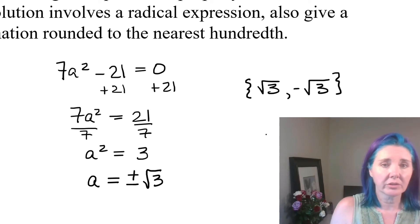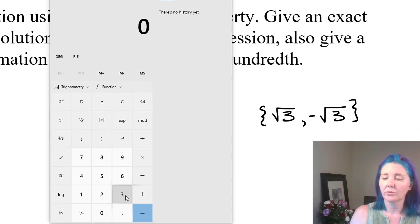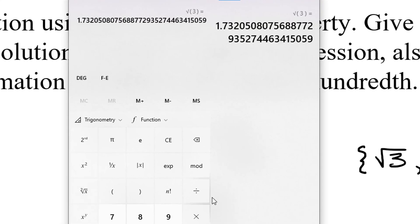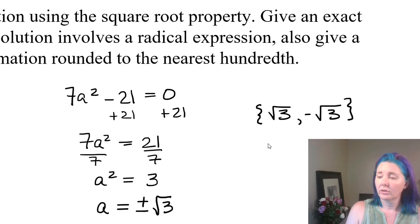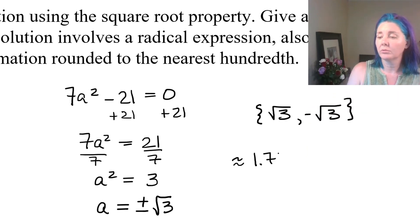But in our instructions, we were told that if you have a radical like this one that cannot be simplified because 3 is not a perfect square, then they wanted us to get a decimal approximation. So I'm going to open up my calculator. All right, so I'm going to take the square root of 3, which is 1.73 and so on. We're going to round to the nearest hundredth. So that's going to be approximately 1.73. So our answers are approximately 1.73 or negative 1.73.